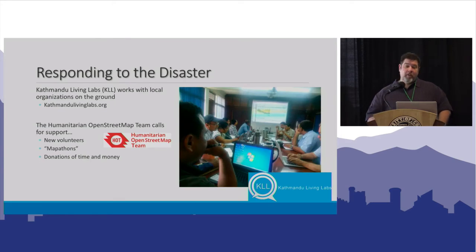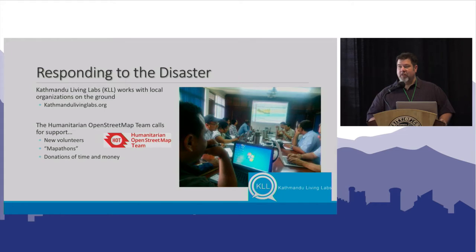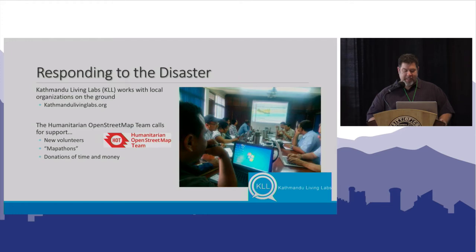Nepal has an amazing OpenStreetMap program called Kathmandu Living Labs, and they really took ownership of being the on-the-ground agency working one-on-one with the relief agencies. They would print off maps on a daily basis for the Red Cross as well as Doctors Without Borders, to give them up-to-date information as it came in, and they could also verify information on the ground. Having that local relief agency already set up and running was pretty spectacular.